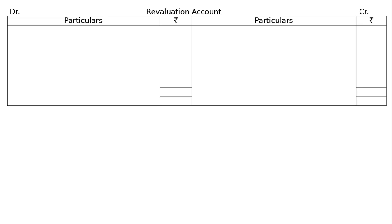Now the revaluation account. After drawing the proper revaluation account, the first item to be treated is machinery — part D. Machinery is to be valued at Rs. 15,000. Here machinery is Rs. 12,000 in the books. So by machinery, Rs. 3,000.